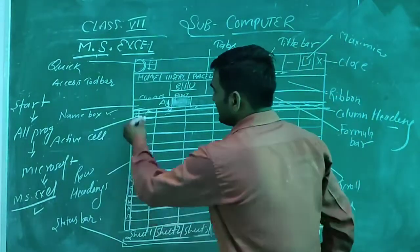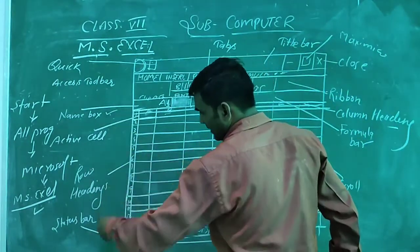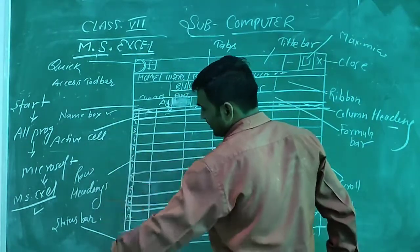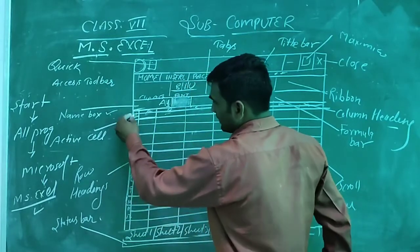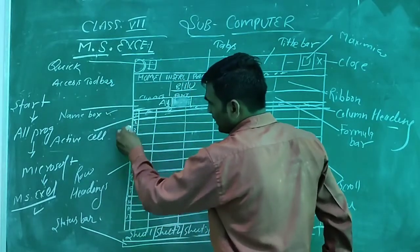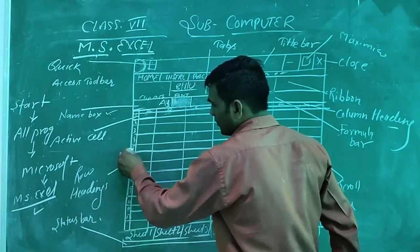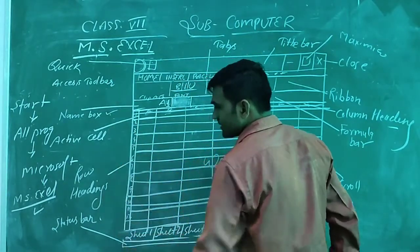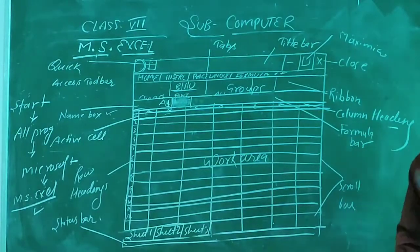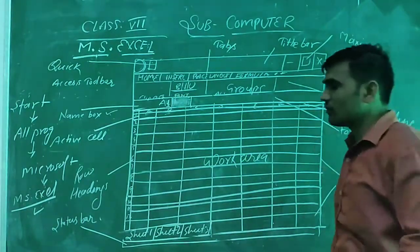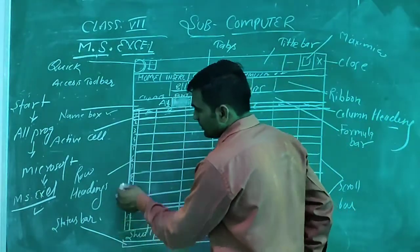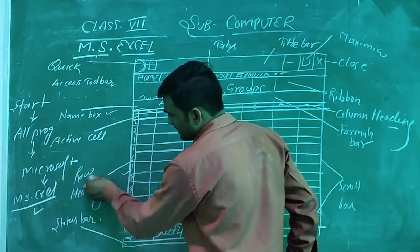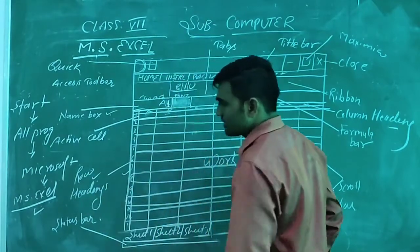After the column headings, on the left side in the vertical section, numbers are displayed starting from 1, 2, 3, 4, 5, 6 and so on. These are the row headings.